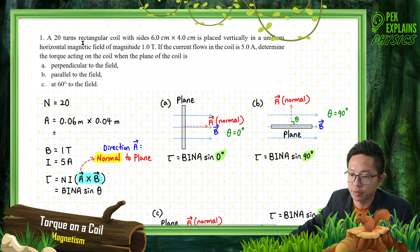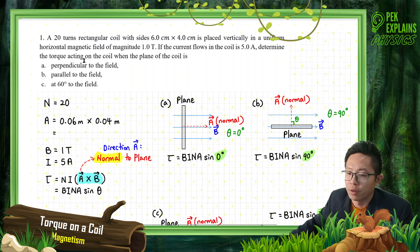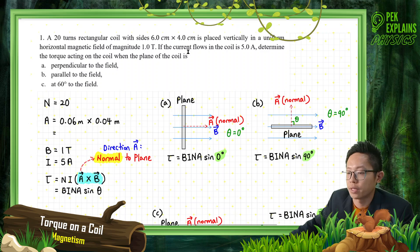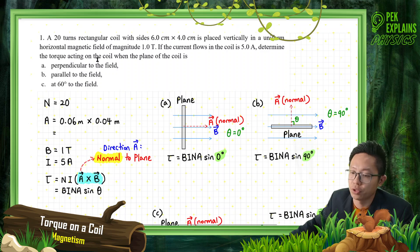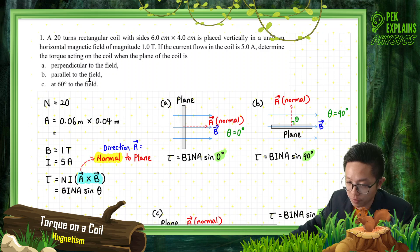A 20-turn rectangular coil with size 6 cm × 4 cm is placed vertically in a uniform horizontal magnetic field of magnitude 1 tesla. If the current flowing in the coil is 5 A, determine the torque acting on the coil when the plane of the coil is: (A) perpendicular to the field, (B) parallel to the field, (C) 60 degrees to the field.